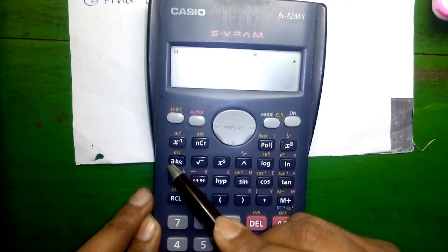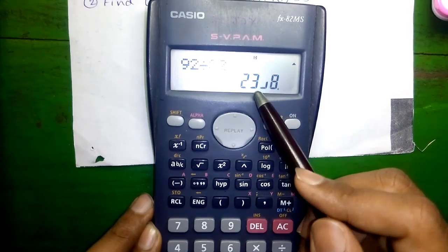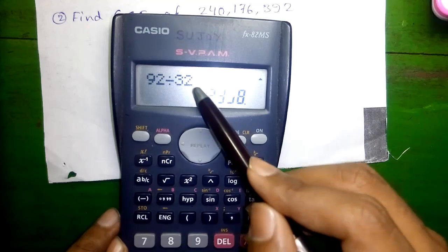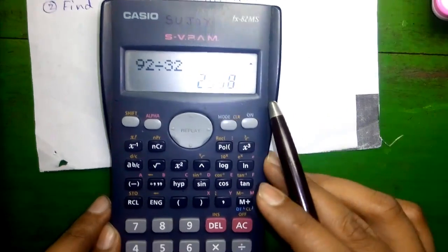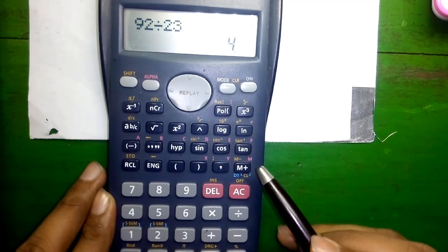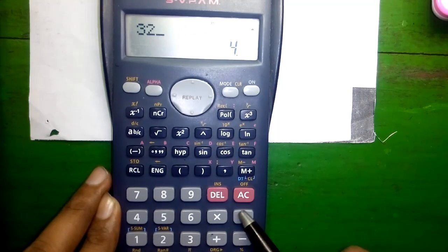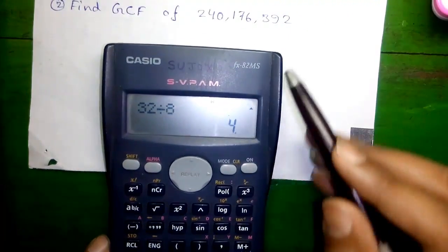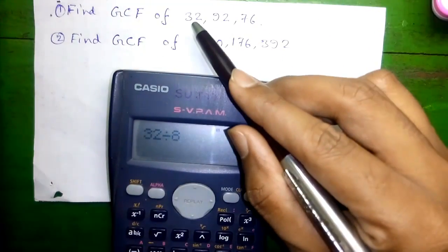Press SHIFT and this button, we got 23 by 8. Now we will divide 92 by 23 and 32 by 8. Got 4, got 4 again. So 4 is the common GCF of 92 and 32.